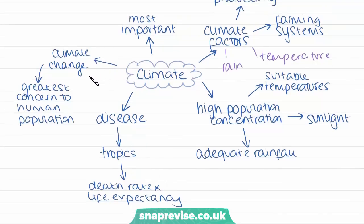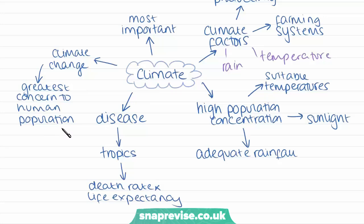Another factor relating to the climate is climate change, which has been arising from global warming. It's the aspect of the environment giving greatest concern to human populations at the start of the 21st century. The climate is changing and this will influence population patterns — it could lead to the scarcity of food — so it's a real challenge that we're going to have to mitigate and deal with.